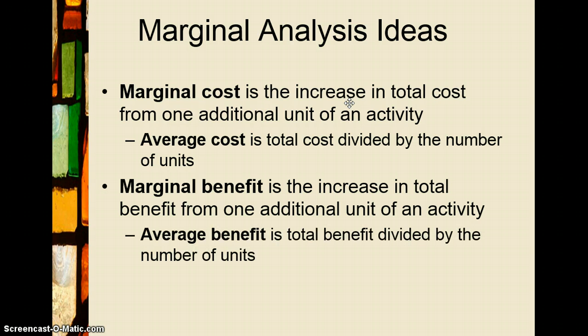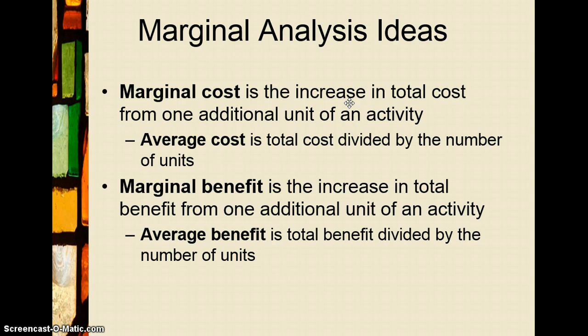Average benefit, like average cost, is total benefit divided by the number of units. In the water bottle example: three dollars from the first bottle, plus two from the second, plus one from the third gives a total benefit of six dollars. Divided by three bottles, that's an average benefit of two dollars per bottle — so the average benefit of the third bottle is two dollars, but the marginal benefit is just one.